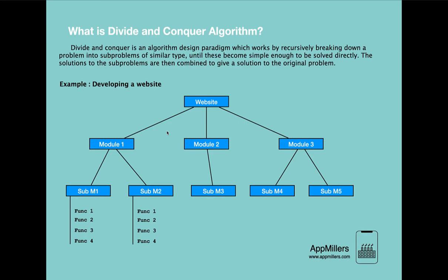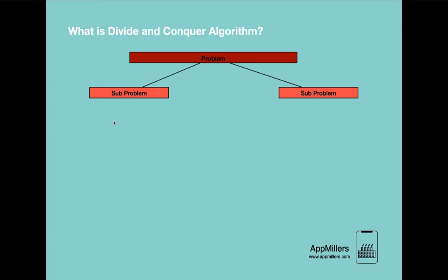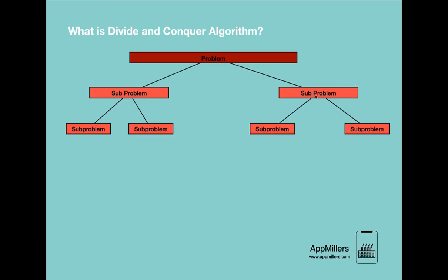Now let's see how the divide and conquer algorithm works internally. Let's say we are given a problem. The first step is we divide this problem into subproblems — say, two subproblems. Then we check if we can divide these subproblems into further subproblems. We see that we can, so we divide each subproblem into two more subproblems. From there we see that we cannot divide further, and at this stage these smaller problems are small enough to be solved independently, so we don't need to break them further.